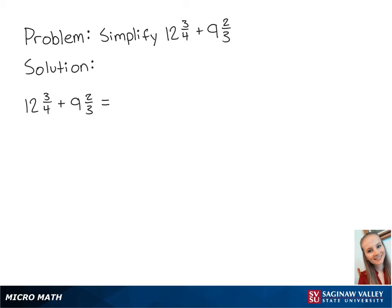First, we need to find a common denominator and then convert the mixed numbers into fractions. The least common multiple of 4 and 3 is 12, so we'll use 12 as the common denominator.